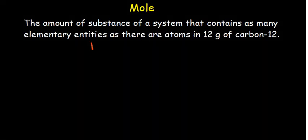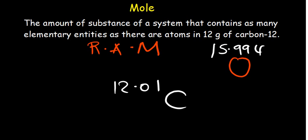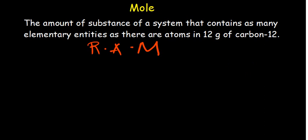When we look at our periodic table, we have relative atomic masses. For example, oxygen has a relative atomic mass of 15.994, and carbon has a relative atomic mass of 12.01. Those are the relative atomic masses of oxygen and carbon respectively. The relative atomic mass is going to be referred to as the molar mass.